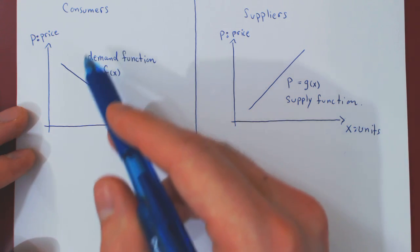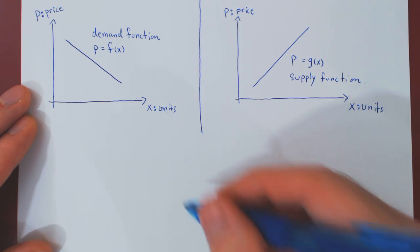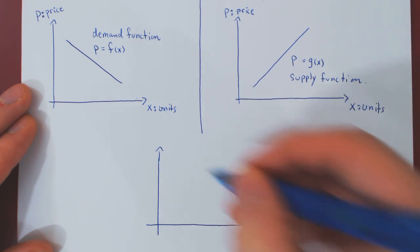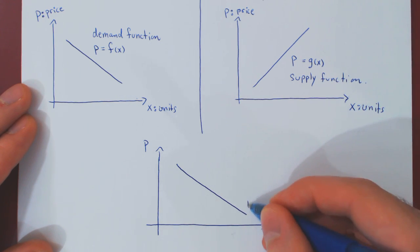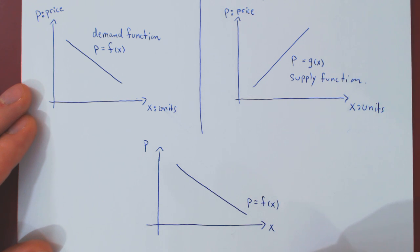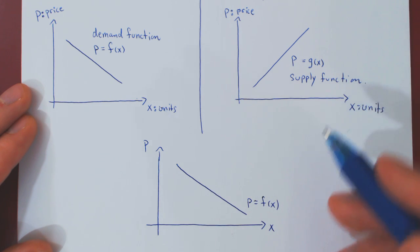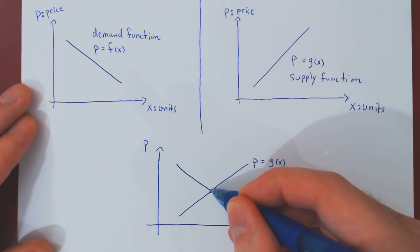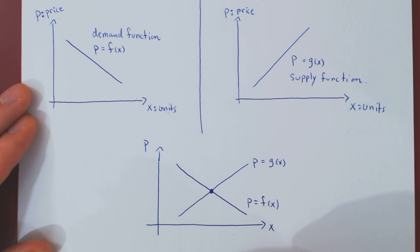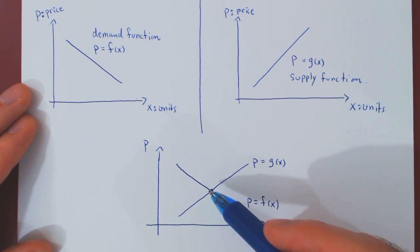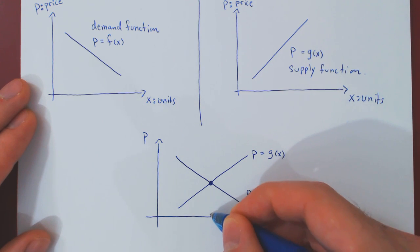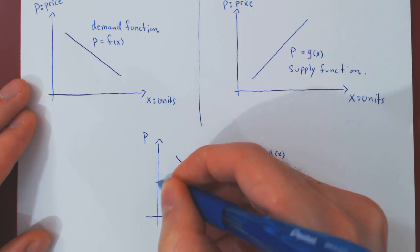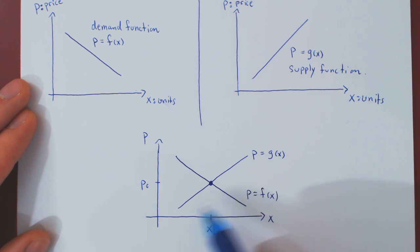The equilibrium point is found by looking at the demand function and the supply function on the same graph. Suppose we look at a unique set of axes — X and P — and we have the demand function P equals F of X, a negative relationship between X and P, and the supply function, which is a positive relationship between P and X. There is, hopefully, a point of intersection between the supply and demand functions. Let X0 be the X value where both functions meet, and P0 be the price where the demand and supply functions both meet.